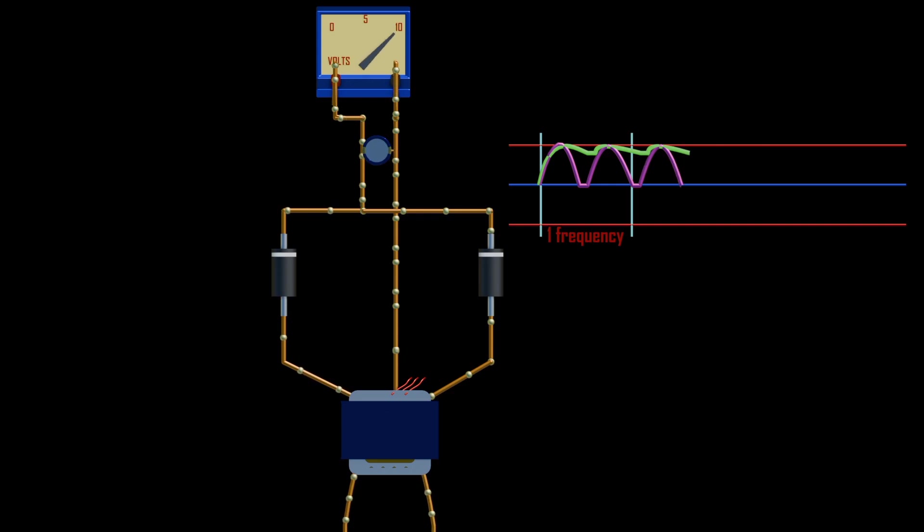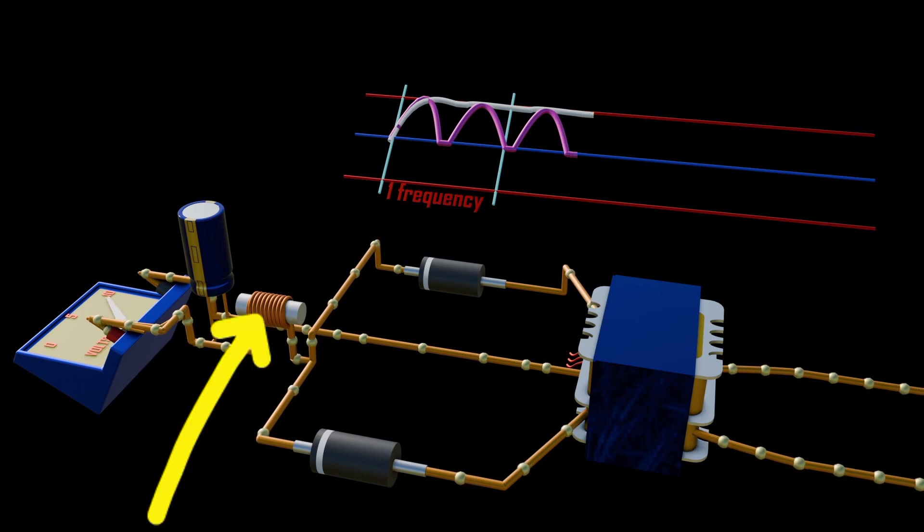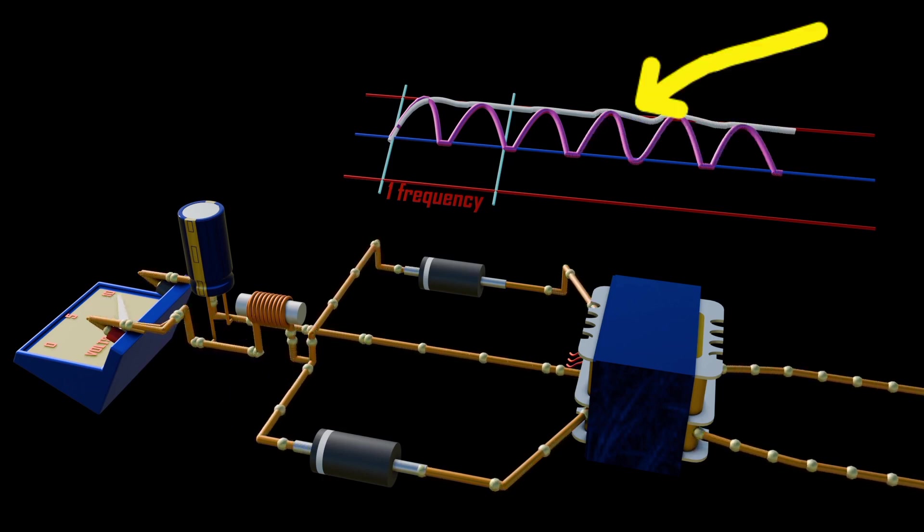When we add some filtering capacitor, the output will be more improved DC with less ripples. Adding an inductor to such a circuit would reduce the ripples even further to form a pure DC output.